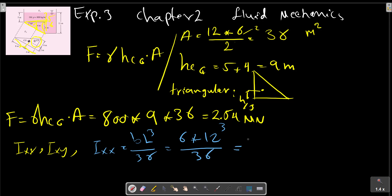So, IXY equals B times (B minus 2S) times L squared over 72.